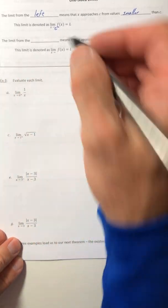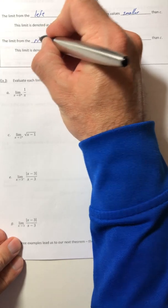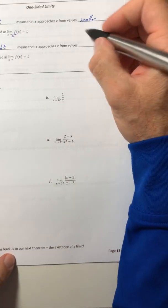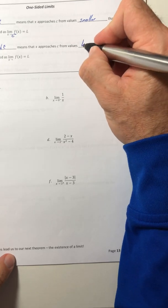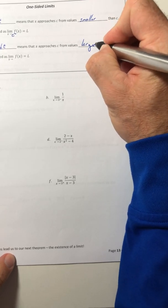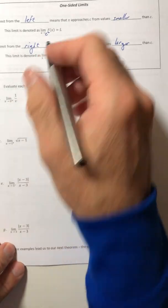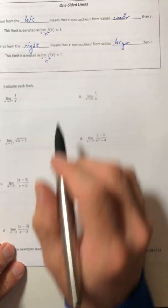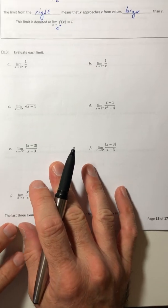Alright, so the limit from the other side or the right side means that X approaches C from values larger than C. So its notation still has the C there, but it's got that little plus sign where the exponent goes.